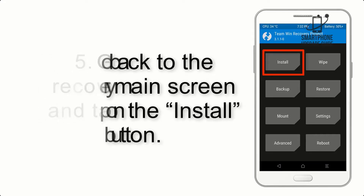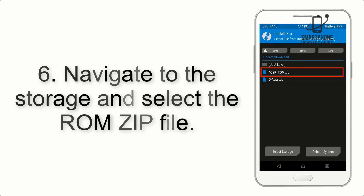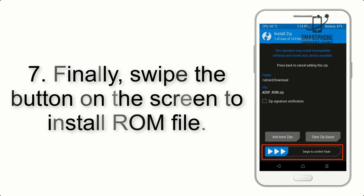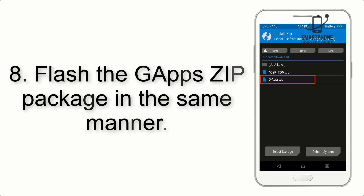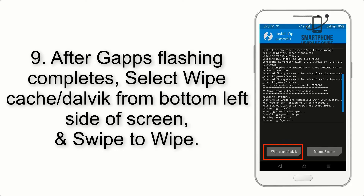Step 6: Navigate to the storage and select the ROM zip file. Step 7: Swipe the button on the screen to install the ROM file. Step 8: Flash the GApps zip package in the same manner.